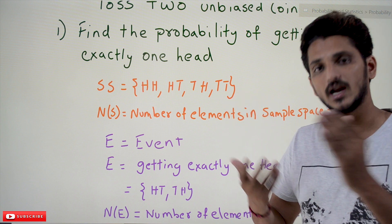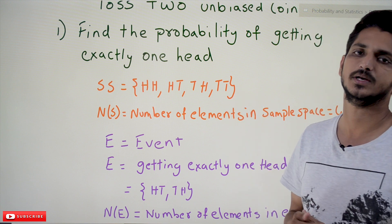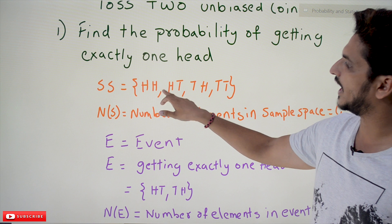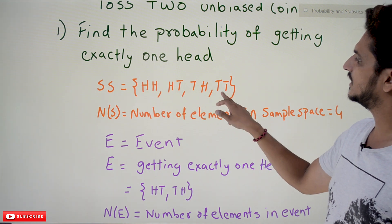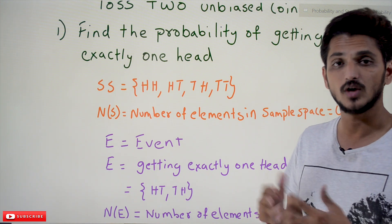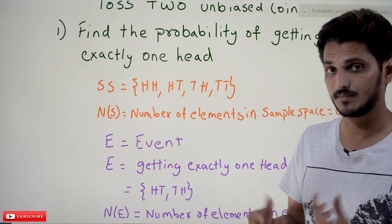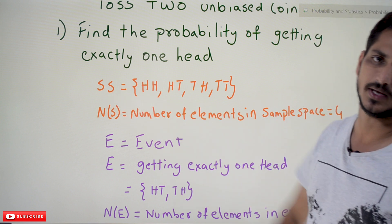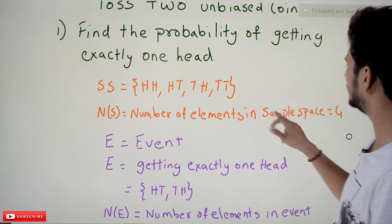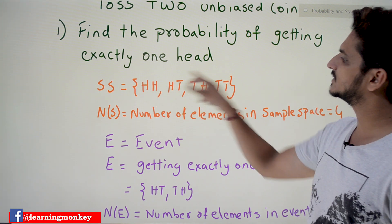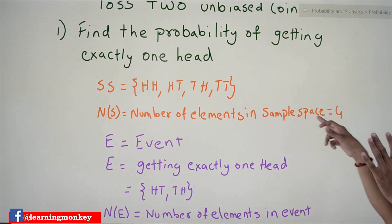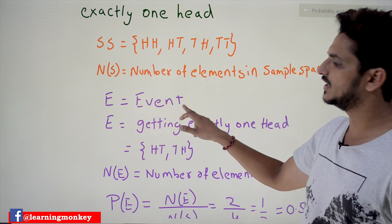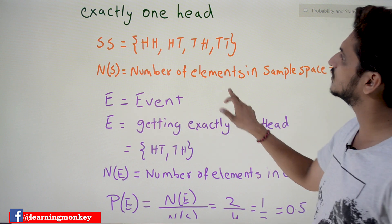The sample space is all the possible outcomes of the random experiment. When we toss two coins, the possible outcomes are: Head-Head, Tail-Tail, Head-Tail, Tail-Head. These are all the possible outcomes when we toss two unbiased coins, and this we call the sample space. N(S) means the number of elements in the sample space — there are four elements total, so N(S) = 4. Now, event E is defined by our question.